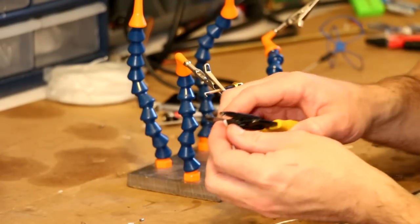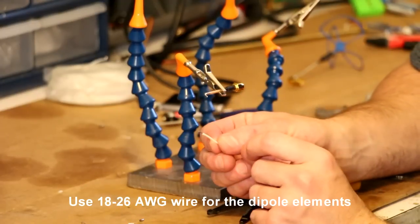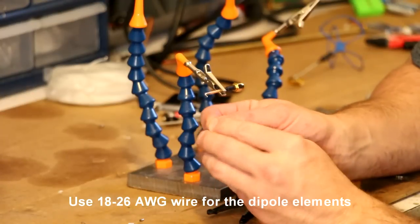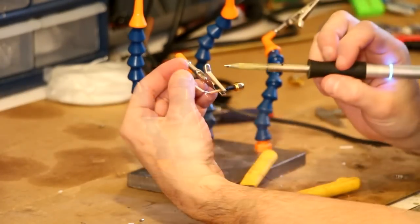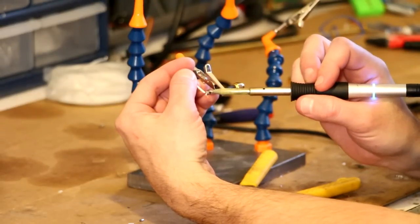Now it's time to make our elements. I'm using 22 gauge wire here but you can use anything between 18 and 26 gauge. Simply strip off about a quarter of an inch and then bend the end approximately 90 degrees. This will then get soldered to the shield of your antenna cable.